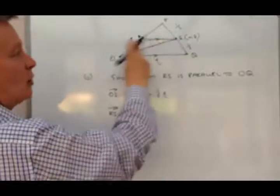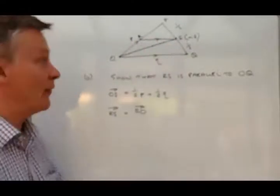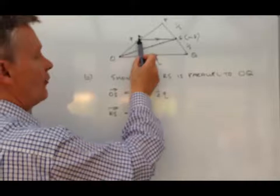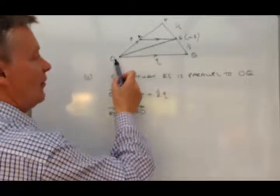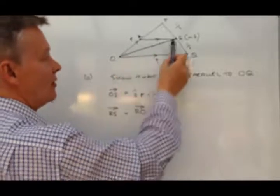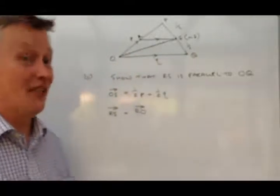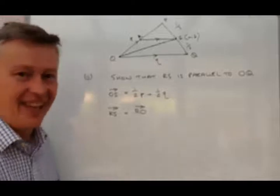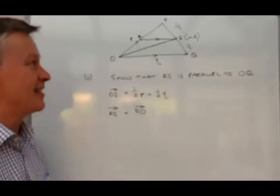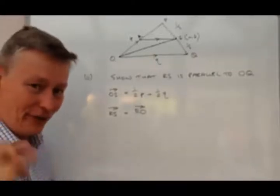So remember we can't go across RS because we don't know what that vector is. So we've got to go from R to O, and then we've got to go from O to S, and that will actually get us from R to S. Just seems a little bit complex at the moment. And this is why this is a kind of an A star type question.